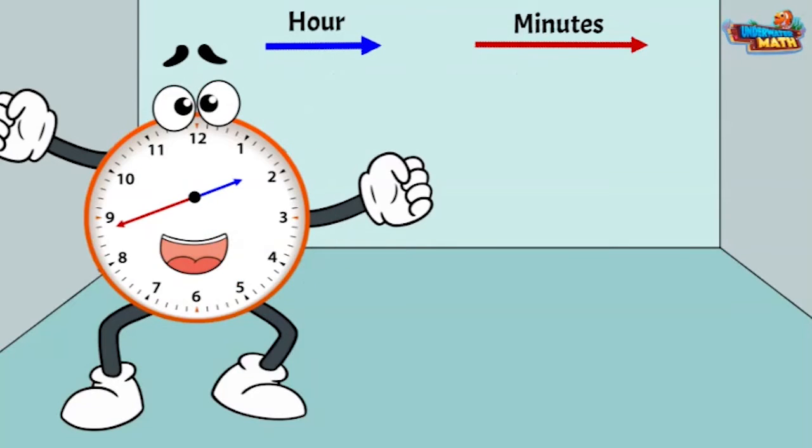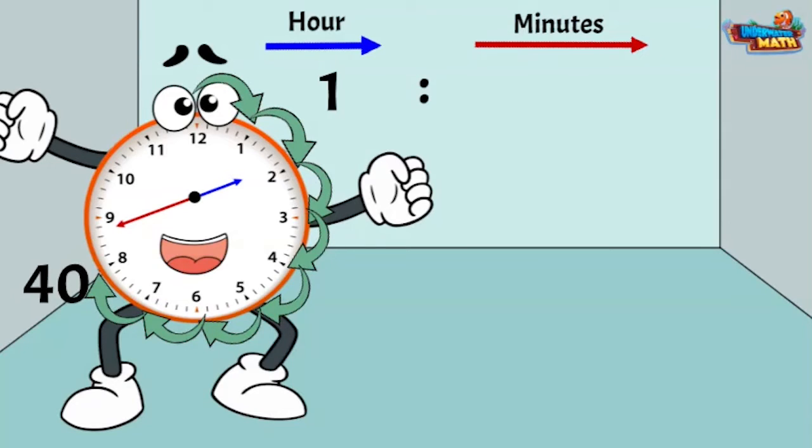A little quicker this time. The short hand falls between 1 and 2, so the hour is 1. Now we count by fives. This time we don't have a whole group of 5, so we must continue counting by 1 like this: 41, 42, 43, 44. This clock shows 1:44.